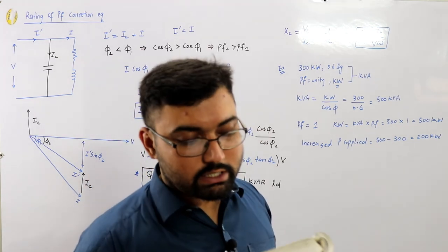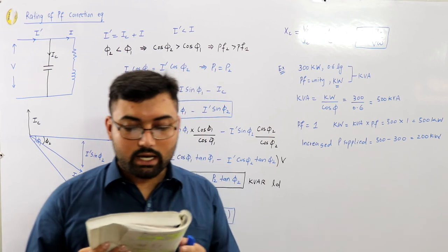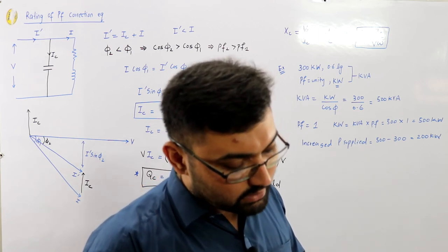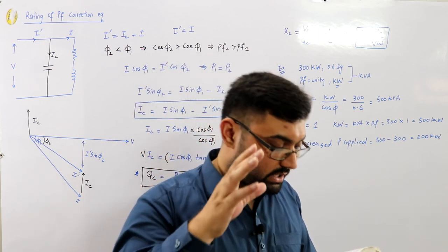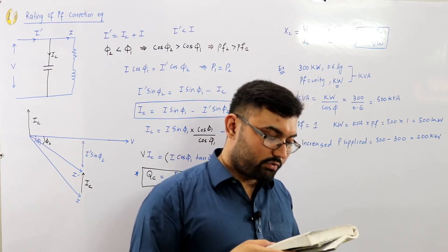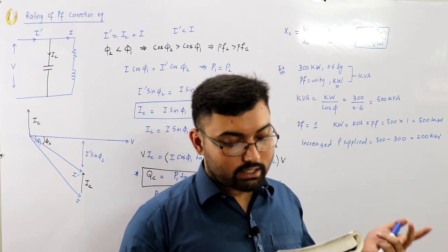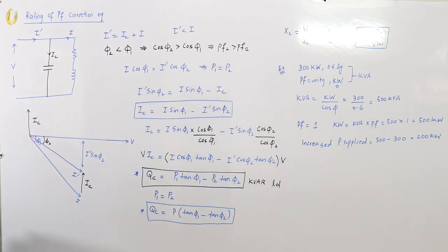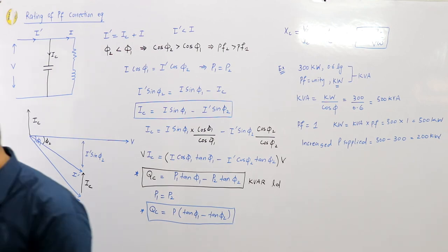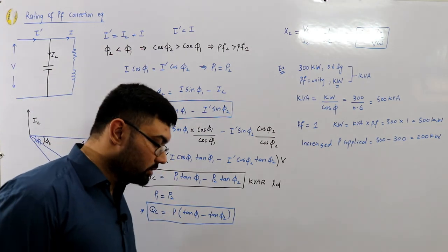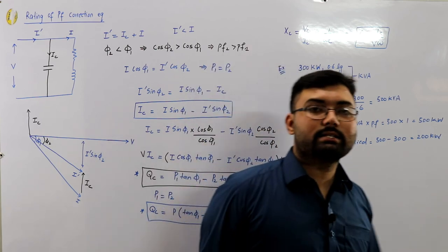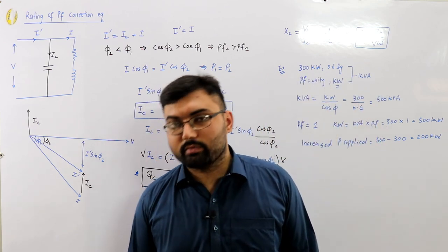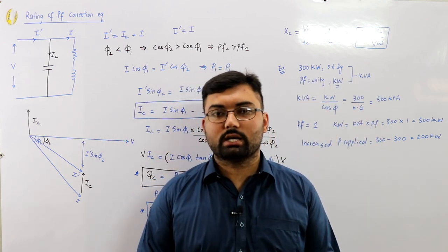This demonstrates the importance of power factor improvement. At unity power factor, 500 KVA equals 500 kilowatts and the engine must develop that full power. At 0.6 power factor, the engine develops only 300 kilowatts though the machine is rated at 500 KVA. We'll discuss more examples in the next video — take care, subscribe to the channel, goodbye.